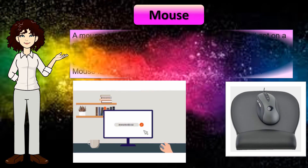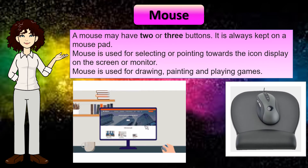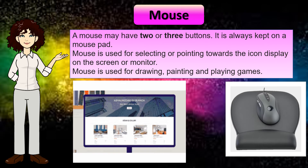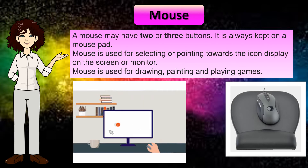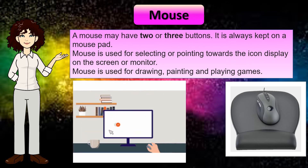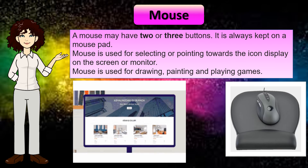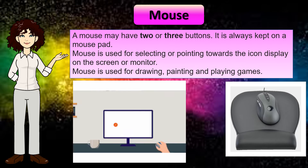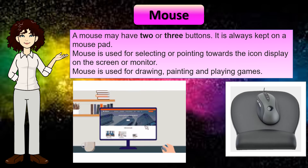A mouse may have two or three buttons. It is always kept on a mouse pad. The mouse is used for selecting or pointing towards the icon displayed on the screen or monitor. The mouse is also used for drawing, painting, and playing games.